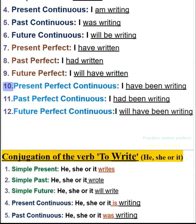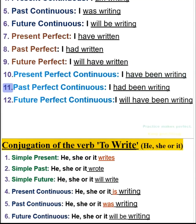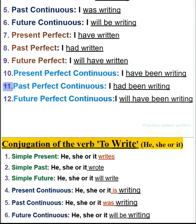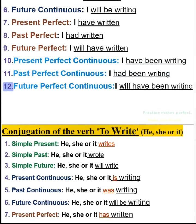10. Present perfect continuous: I have been writing. 11. Past perfect continuous: I had been writing. 12. Future perfect continuous: I will have been writing.